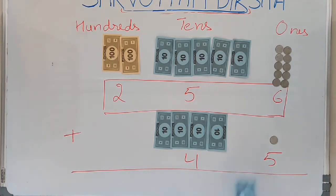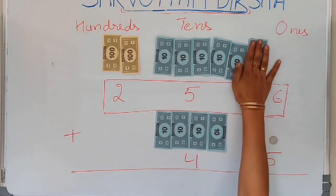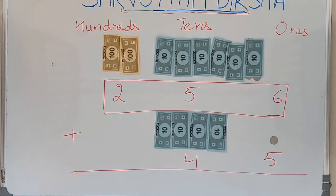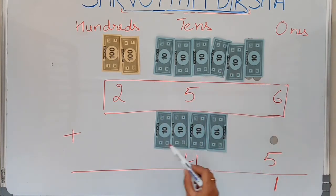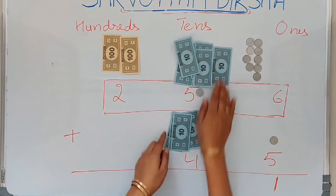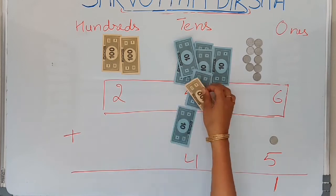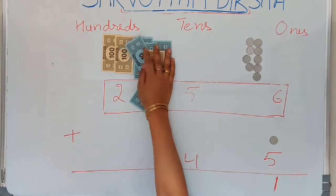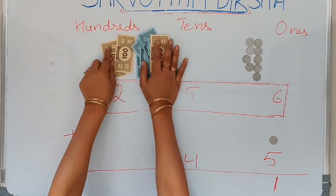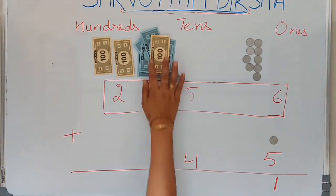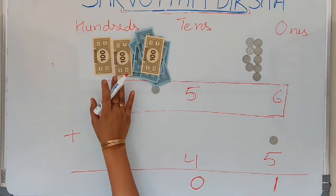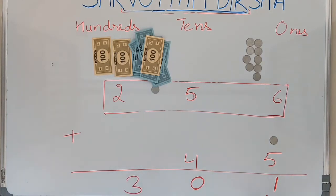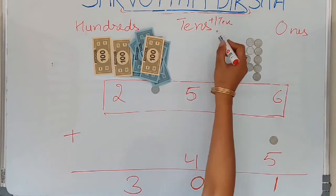Now if I add 6 ones with 5 ones, I get 11 ones — that is 10 ones and 1 one. The 10 ones get replaced with 1 ten and come here. So now how many ones are left? I am left with 1 one only. Now how many tens do I have? 1+2+3+4+5+6+7+8+9+10 — again 10 tens! And 10 tens get replaced with 1 hundred, which comes to the hundreds place. So how many tens are left? 0 tens. And how many hundreds? 3 hundreds.